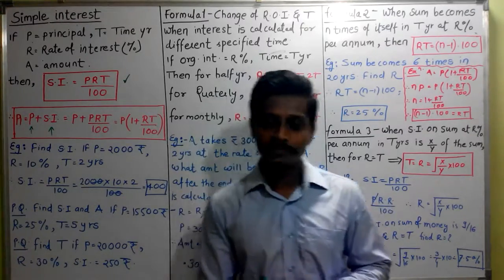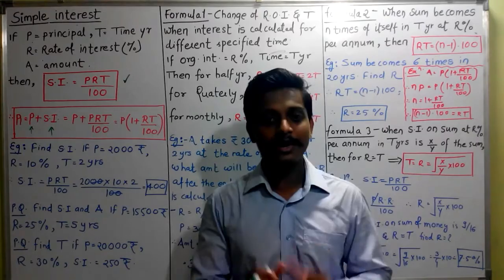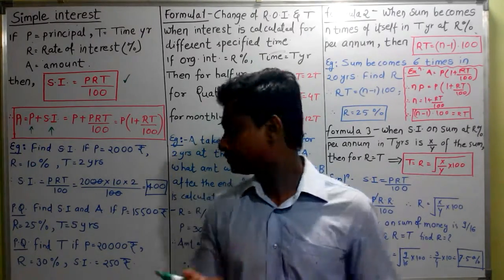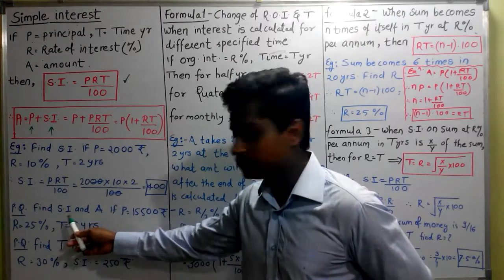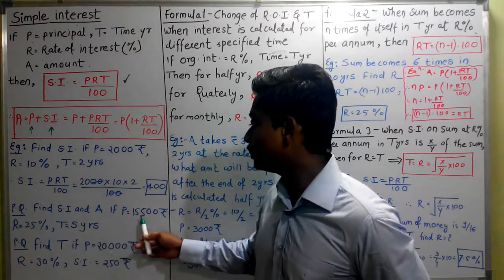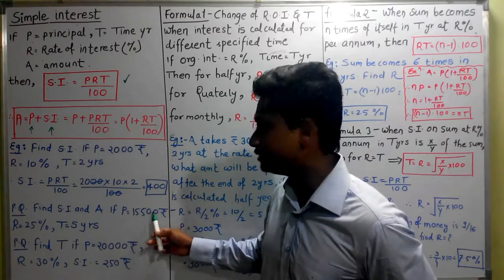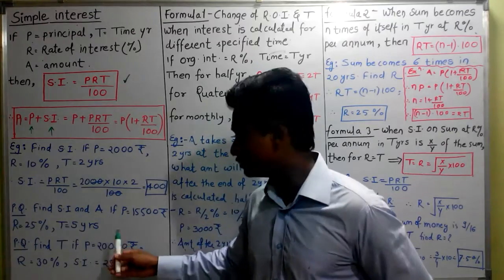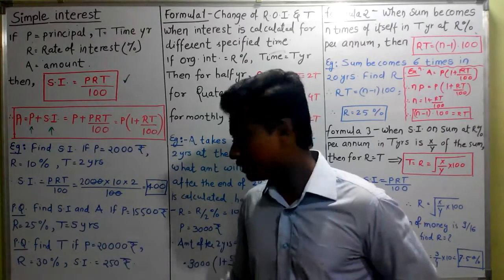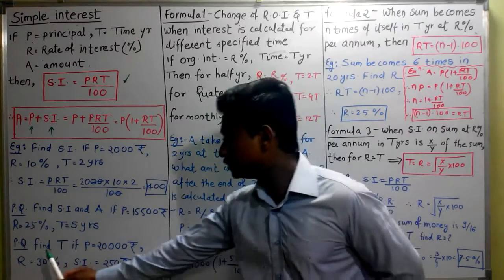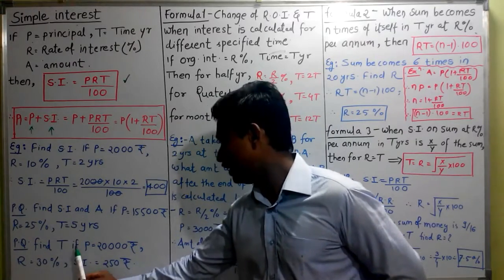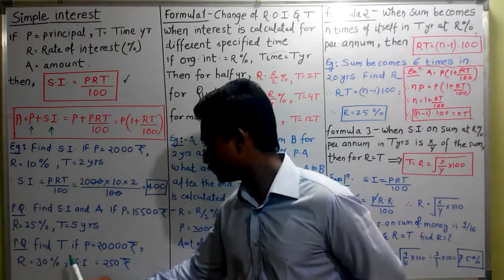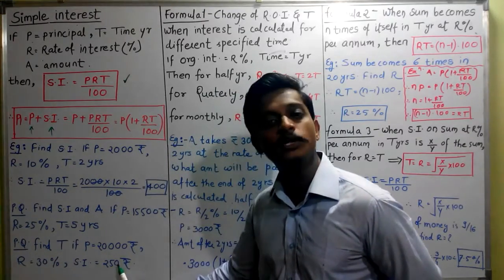Now I am going to give you two practice questions which I want you to solve and write the answer in the comment section. First practice question: Find simple interest and final amount if principal amount is 15,500 rupees, rate of interest is 25%. Second question: rate of interest is 30% and simple interest is 250 rupees.